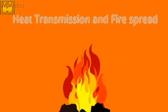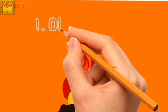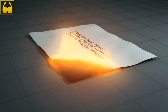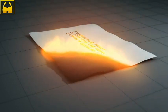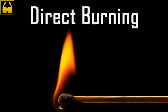Heat transmission and fire spread. Heat can be transmitted in four different ways. Number 1: Direct burning — a flame front moves through the burning material. For example, this happens when setting fire to the corner of a piece of paper with a match. Think of how the flame front moves from the match and spreads across the paper. This process is called direct burning.